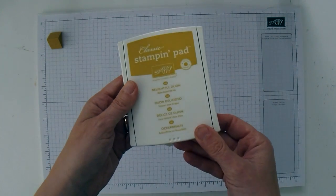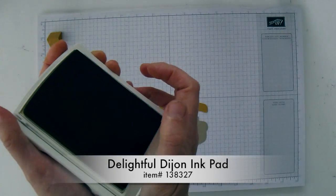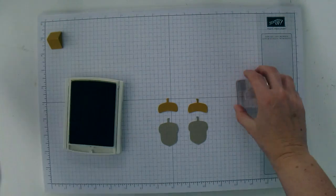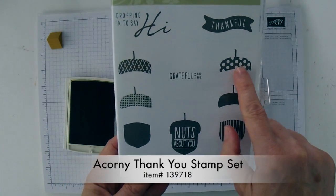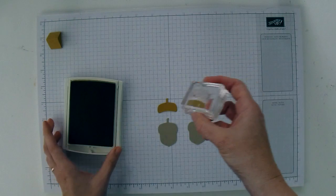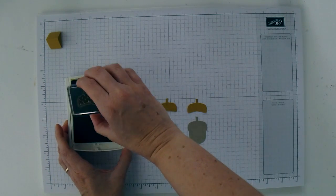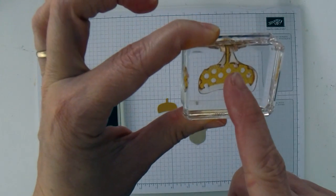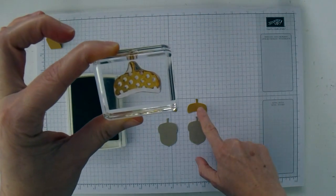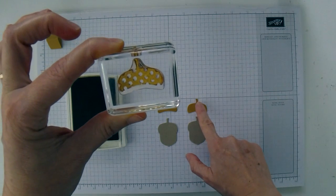Then I'm going to take my Delightful Dijon ink pad. And I'm going to take the cap. I'm going to use this one with the polka dots here. And I'm going to ink this up. Now this stem has a slight curve, but it's a lot narrower or a lot smaller than the curve of the punch.